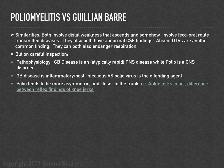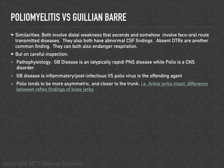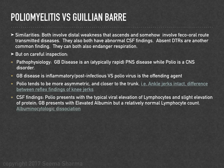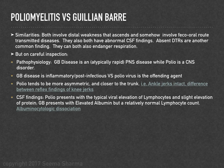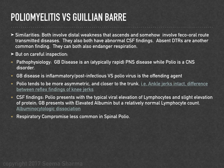Key differences: Guillain-Barré is a peripheral nervous system disease that is inflammatory or post-infectious, most commonly following Campylobacter jejuni infection, while polio is a CNS disorder caused by the poliovirus. Polio tends to be more asymmetric and proximal — for example, the knee jerks may differ between sides. CSF in polio shows elevated lymphocytes and slight protein elevation, whereas Guillain-Barré shows albuminocytologic dissociation (elevated albumin, normal lymphocyte count).